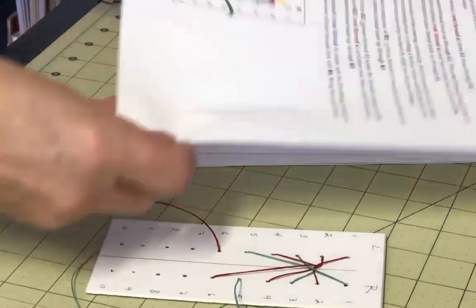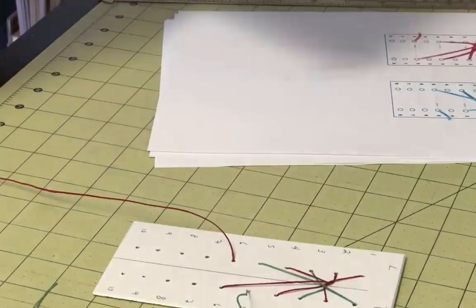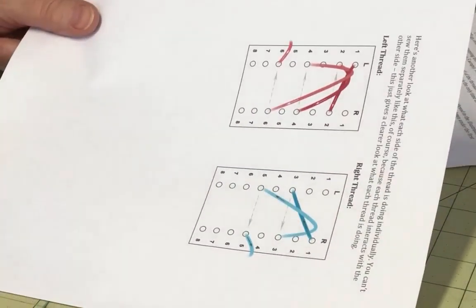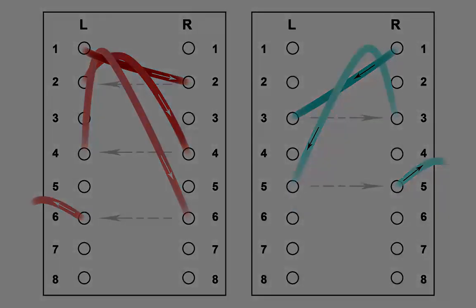The second page is really just for reference. It shows you what each thread is doing individually. You can't sew them separately like this, because they need to intertwine with each other. So this is here only if you find the multicolored diagram confusing. And just a reminder, this first part is the most awkward part of the caterpillar stitch. Once you finish the head, and we're close, the rest is pretty smooth sailing.